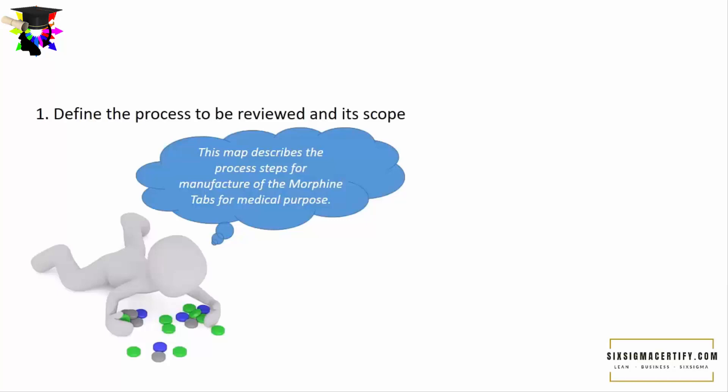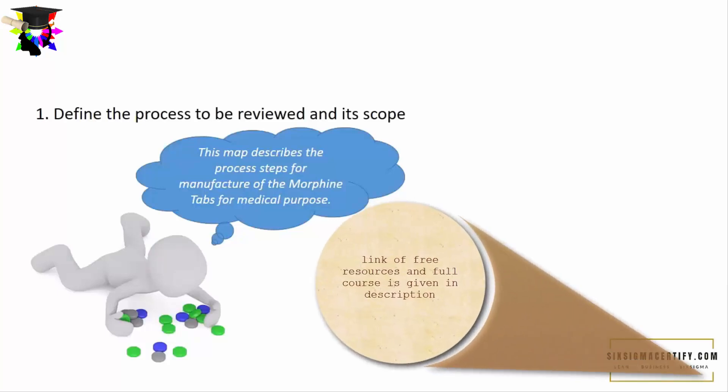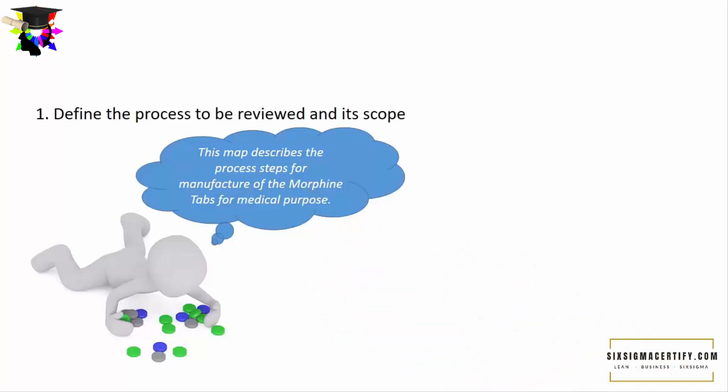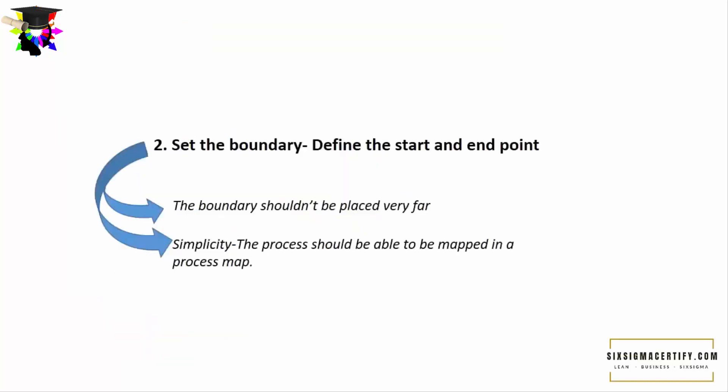Now let us see the steps of drawing the SIPOC. The first step is defining the process to be reviewed and its scope. In our example of manufacturing morphine tablets, the scope of the project can be defined as: this map describes the process steps for the manufacture of morphine tablets for medical purposes. We should know exactly what we are doing and what the scope of the SIPOC matrix is. The second step is setting the boundary — we should set the definite start and end point. The boundary should not be placed very far, and the process should be as simple as possible and mappable within the SIPOC diagram. If it is very complex and you cannot map the process inside the SIPOC diagram, then it is of no use for drawing the SIPOC.